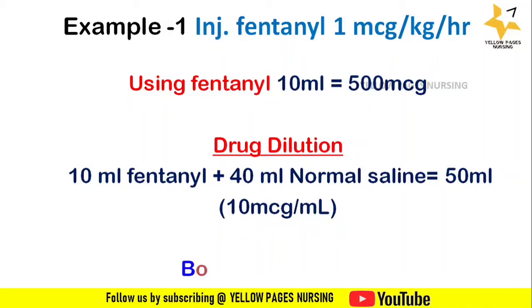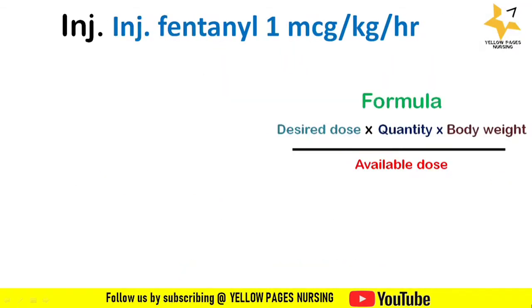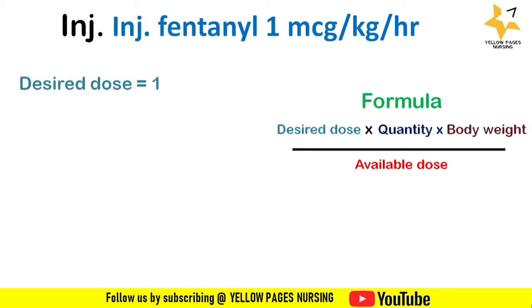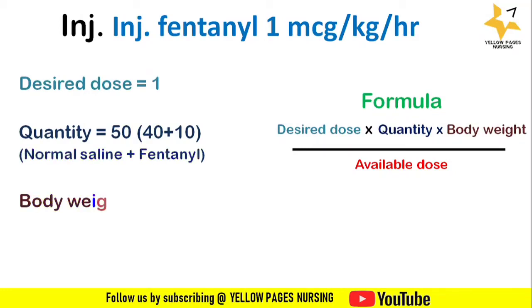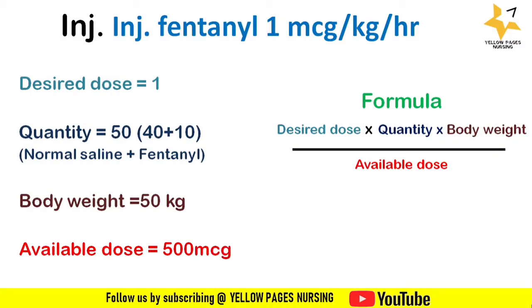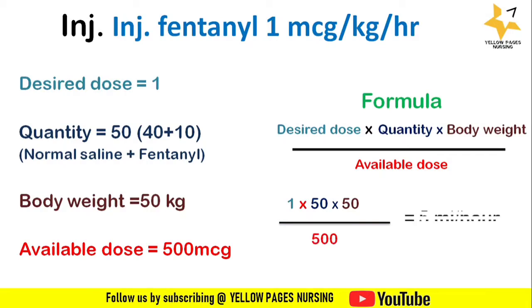The given body weight of the patient is 50 kg. Applying the formula: desired dose is 1, quantity is 50 (40 ml normal saline + 10 ml fentanyl), body weight is 50 kg, and available dose is 500 micrograms. Applying all values into the formula gives the answer: 5 ml per hour.